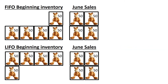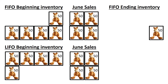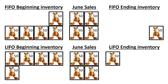Four boxes of toy giraffes are sold in June. With FIFO — first in, first out — we assume that the oldest inventory gets sold first: the remaining three boxes bought in February and one box purchased in March. What stays in inventory at quarter end under FIFO is one box purchased in March. With LIFO — last in, first out — we assume that the newest inventory gets sold first: the remaining three boxes bought in February and one box purchased in January. What stays in inventory at quarter end under LIFO is one box purchased in January.